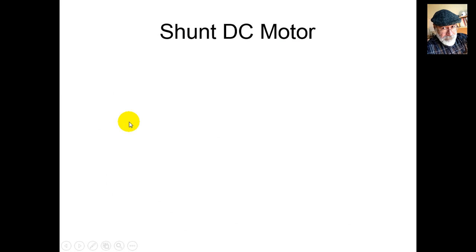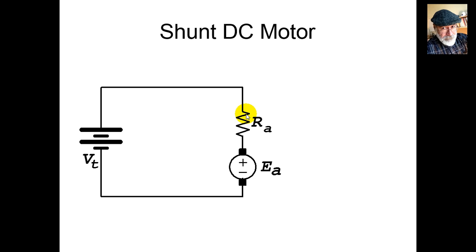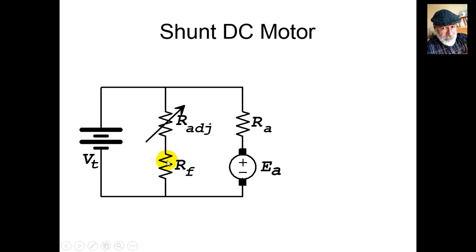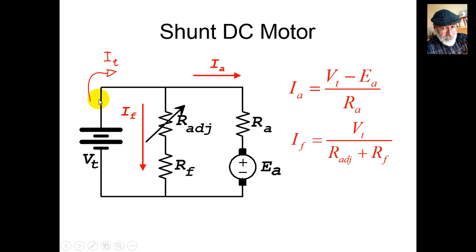Here is the circuit diagram for shunt excitation. We have the external battery connected to the armature, represented by its resistance RA and the induced voltage EA. In shunt with the armature we connect the field coil circuit, represented only by its resistance RF. In this circuit we identify the armature current I_A, the field current I_F, and the total terminal current I_T.